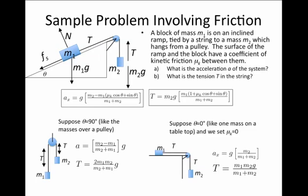and we find that a is g times M2 minus M1 mu k over M1 plus M2, and T is M2g times M1 times 1 plus mu k over M1 plus M2.